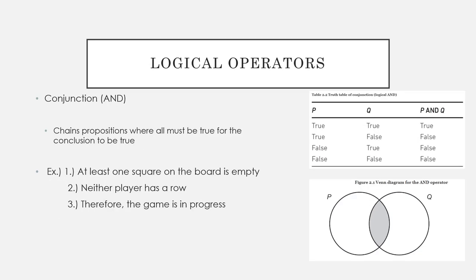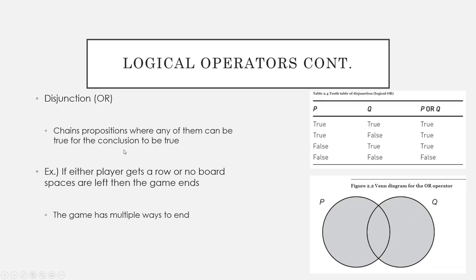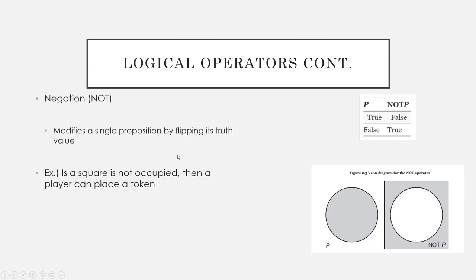To recap the three operators: conjunction, or logical AND, deals with multiple propositions where every single proposition must be true for the conclusion to be true. Disjunction, or logical OR, also chains multiple propositions, but any one of those propositions can be true for the conclusion to be true. NOT flips the truth value of a single proposition.